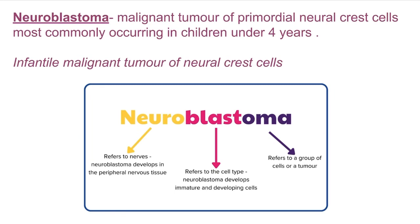The word neuroblastoma means: 'neuro' refers to the nerves, as neuroblastoma develops in the peripheral nervous tissue. 'Blast' refers to the cell type — the cells involved in neuroblastoma are immature and developing cells, which is why it is seen in infants. The cells involved are neural crest cells, which are immature and developing. 'Oma' refers to the tumor.